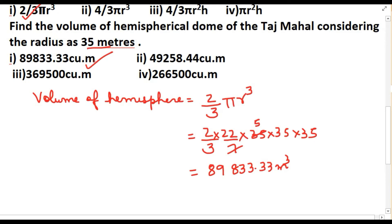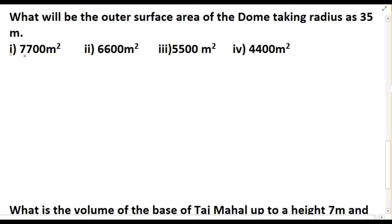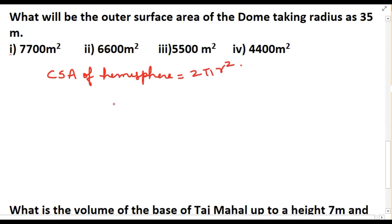What will be the outer surface area of the dome, taking radius as 35 meters? The dome is in the shape of a hemisphere, so we use the curved surface area (CSA) of a hemisphere. The formula is CSA = 2πr², which equals 2 × (22/7) × 35 × 35. Cancelling 7 with 35, we get 2 × 22 × 5 × 35.